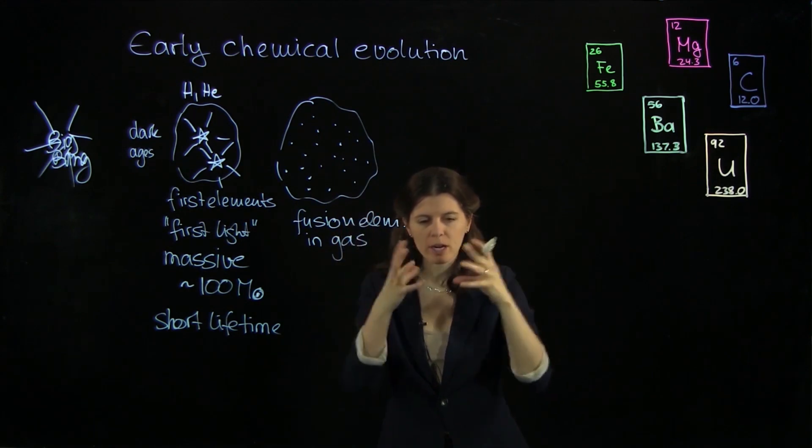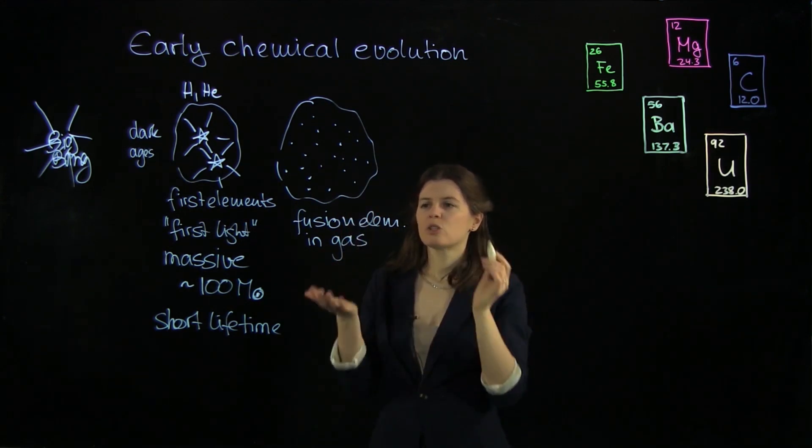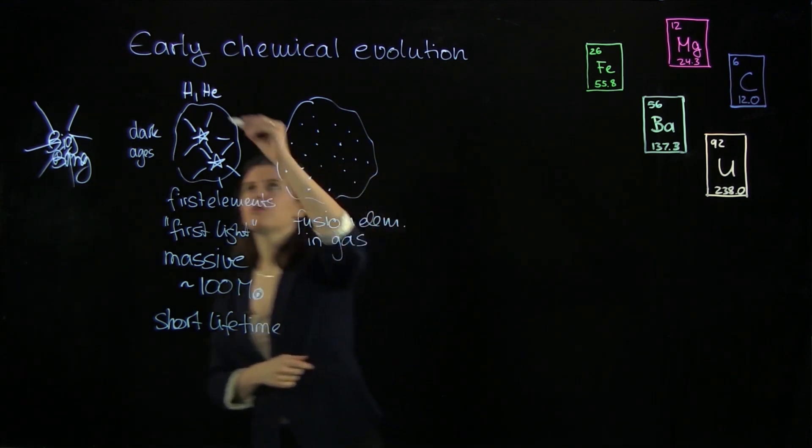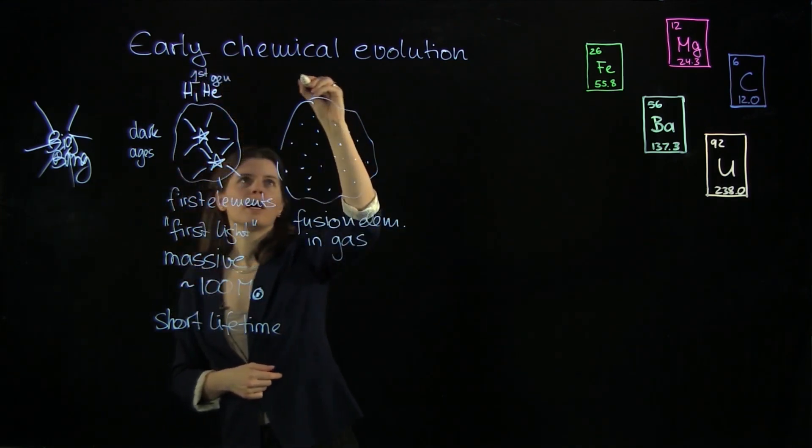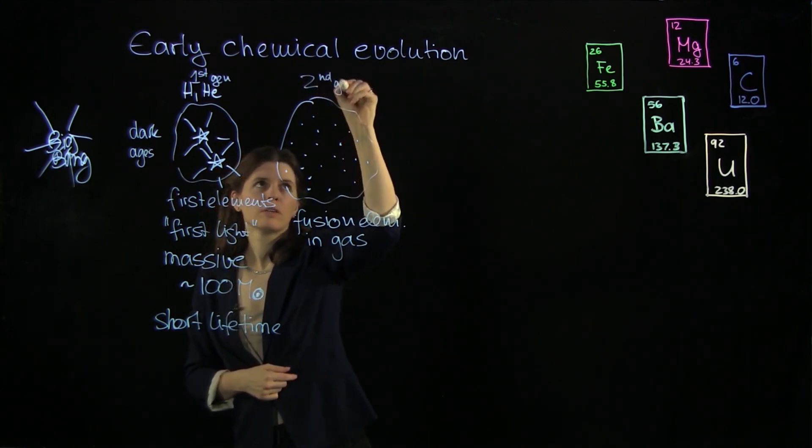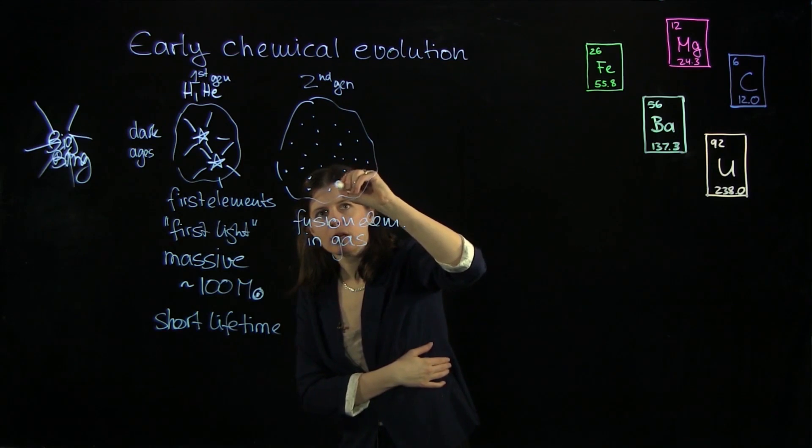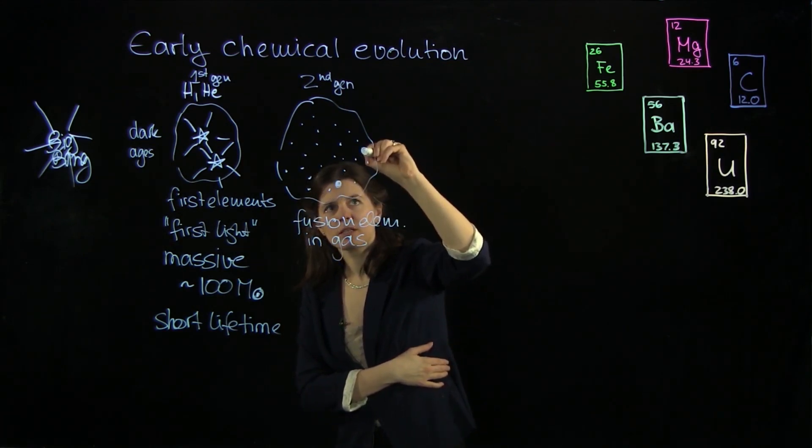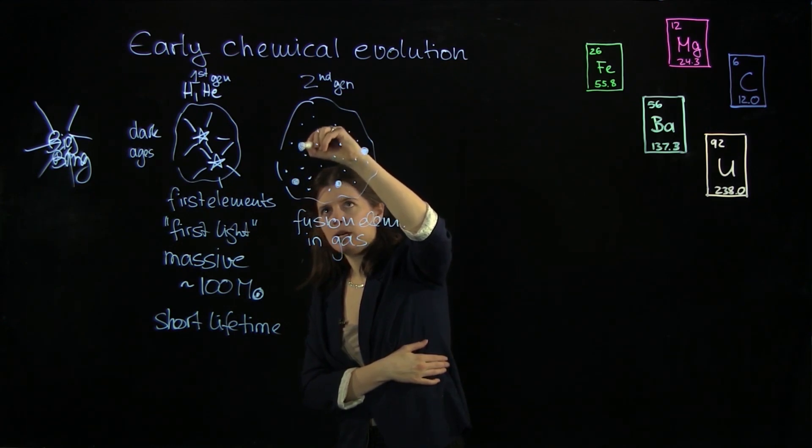And with the onset of these little other elements being in the gas, now the gas could clump much better and actually make small stars. So the next generation of stars - so this was the first generation. And here now we have the formation of second generation stars. Small stars similar to the sun.